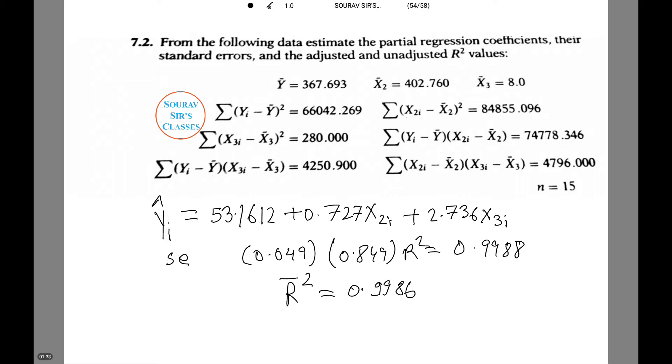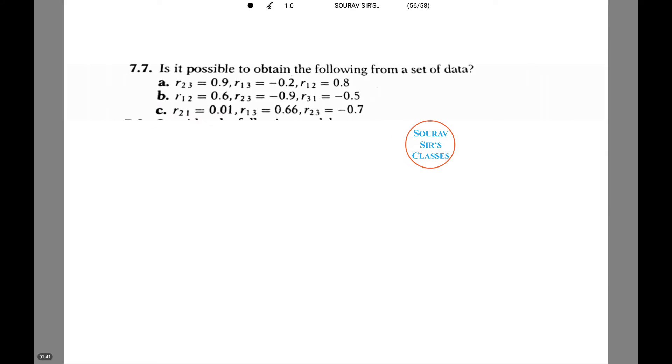Now moving on to another question, we'll deal with the theoretical type of question. It is asked, is it possible to obtain the following from a set of data? r23 equals 0.9, r13 equals -0.2, r12 equals 0.8.